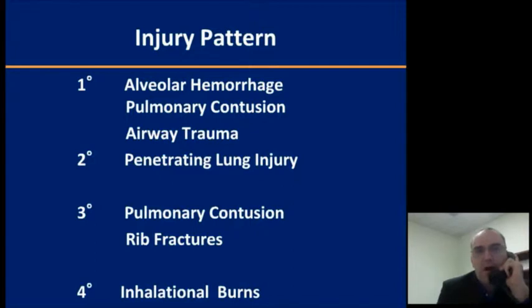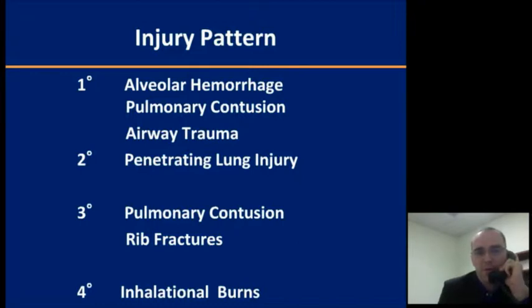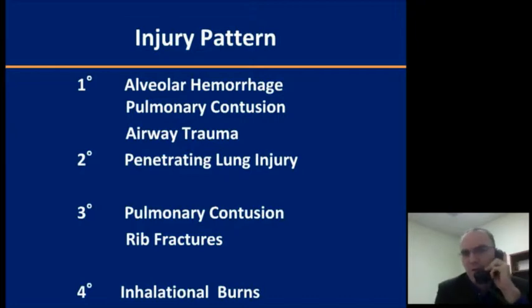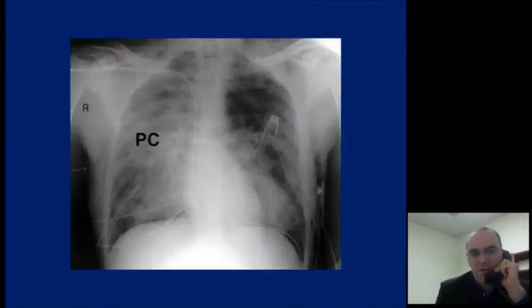Going into the injury pattern — the primary blast injury is going to cause primarily pulmonary contusion. As an intensivist, I think of this as essentially hemorrhagic pulmonary edema as a sequela from the blast. Additionally, you're going to get some potentially airway trauma because you have air-tissue interfaces all throughout the airways, and if you're close enough to the blast, those airways can actually rupture. The secondary injury is going to cause penetrating lung injury — this causes frank arterial hemorrhage if a missile lacerates a small artery within the lung. The tertiary injury is your pulmonary contusions from striking an object, and you can also get rib fractures, pneumothorax, and hemothorax. And the quaternary injuries are your inhalational burns.